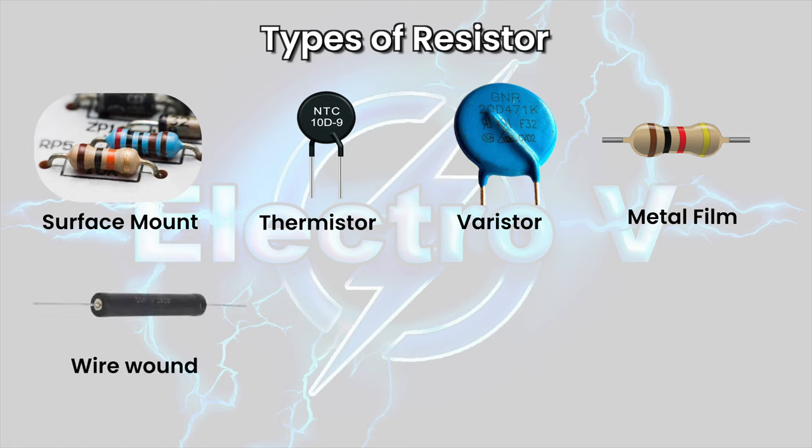Wire wound resistor: made by winding a wire around an insulating core. They can handle high power levels and have a low resistance value, but can be expensive and have a higher inductance than other types of resistors.